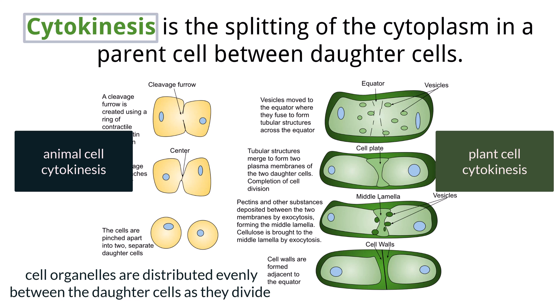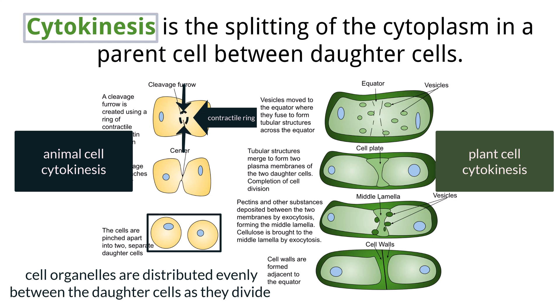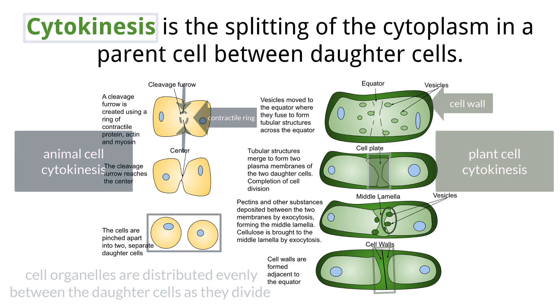In animal cells, the plasma membrane pinches in, forming a cleavage furrow, which is an indentation in the plasma membrane. A contractile ring made of actin, myosin, and other proteins forms, and that pinches the cell membrane together to divide the cytoplasm. Because of the cell wall, plant cells form a cell plate. The cell plate is built by vesicles formed from the Golgi apparatus. These vesicles line up on the equator where they combine to form new plasma membrane and cell walls between the two new cells.